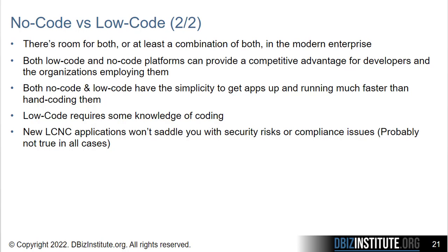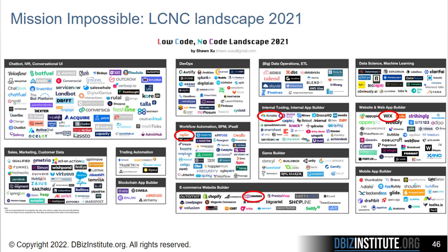But you do have to be careful because that's probably not true in every case. In a one-day course, I can't even begin to address all these tools — that's mission impossible. But I can show you a few, and we can have some workshop time with at least four of them. You see them circled in red here, the ones in the course today: Zapier, Airtable, WooCommerce, and Wix.